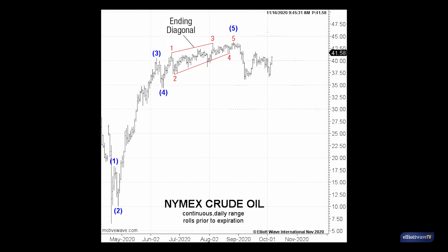The ending diagonal supports a second very important message: a minimum price objective, which hadn't been fulfilled at the time of the video. Subscribers were well aware of it and I pointed it out to viewers. Ending diagonals are almost always fully retraced, and that's exactly what transpired. In this instance, it meant that crude should extend its decline to the wave four low — the origin of ending diagonal wave five — and it did so on November 2nd.